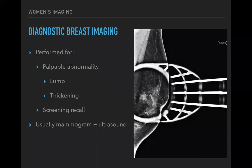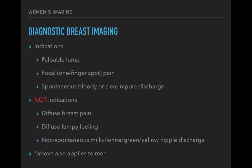Diagnostic breast imaging is performed for anyone with a symptom — either a palpable abnormality or a screening recall — and usually entails both mammogram and ultrasound. Indications include a palpable lump palpated by the patient or clinician, focal persistent pain that is not cyclical or diffuse, and spontaneous bloody or clear nipple discharge, which could be a sign of an abnormality in a duct.